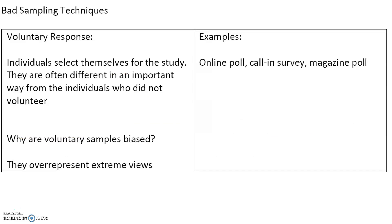Here are some bad sampling techniques. A voluntary response sample is one where individuals select themselves for the study. They are often different in an important way from those who did not volunteer, because voluntary samples tend to over-represent extreme views. For example, Yelp pages often have all five-star or all one-star reviews with little middle ground, because people who bother to rate tend to have extreme opinions. Online polls and call-in magazine surveys fall into this category. Voluntary response is always a bad sampling technique.